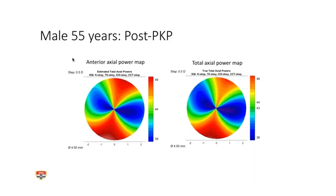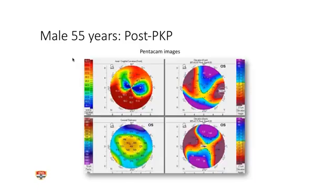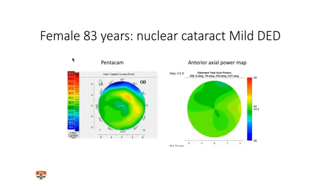The anterior axial power map is on the left and the total axial power map on the right. You would expect in a post-corneal transplant patient for them to be a little different because the normal relationships have broken down — and that is the case here. You see some difference between the anterior and total, which fits with what this is attempting to do. The Pentacam gives you more information: corneal thickness and posterior corneal mapping. But you've got very useful information already from the IOLMaster with no extra technology or effort.